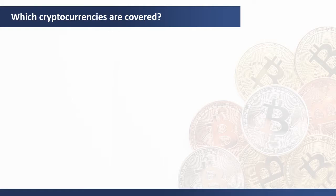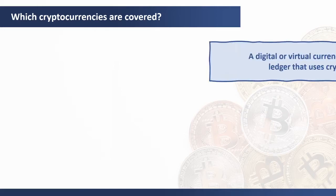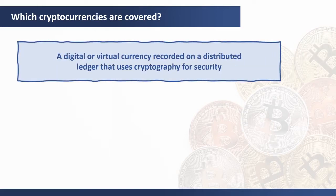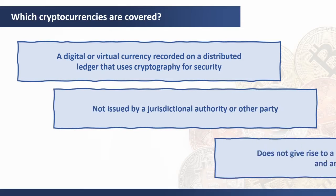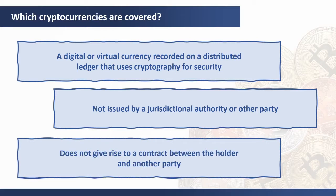The committee noted that a range of crypto assets actually exist. For the purposes of this discussion, the committee considered only cryptocurrencies with all of the following characteristics: first, the cryptocurrency should be a digital or virtual currency recorded on a distributed ledger that uses cryptography for security; second, it is not issued by a jurisdictional authority or other party; and lastly, it does not give rise to a contract between the holder and another party.